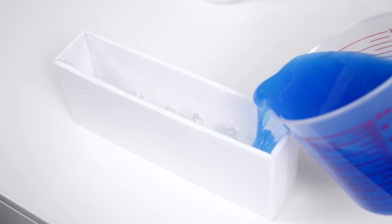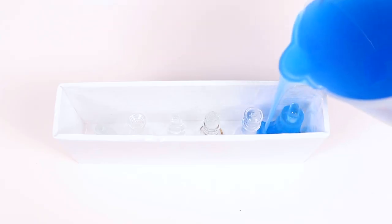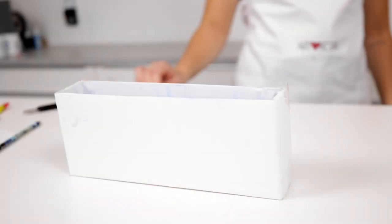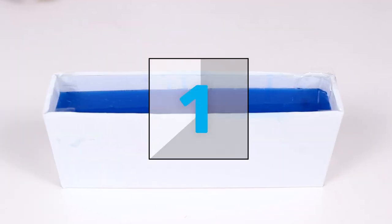Next pour the mixture into your container and over your chess pieces. You'll want to completely submerge each piece and then sit back and let the mold cure. Three hours at room temperature will do the trick.